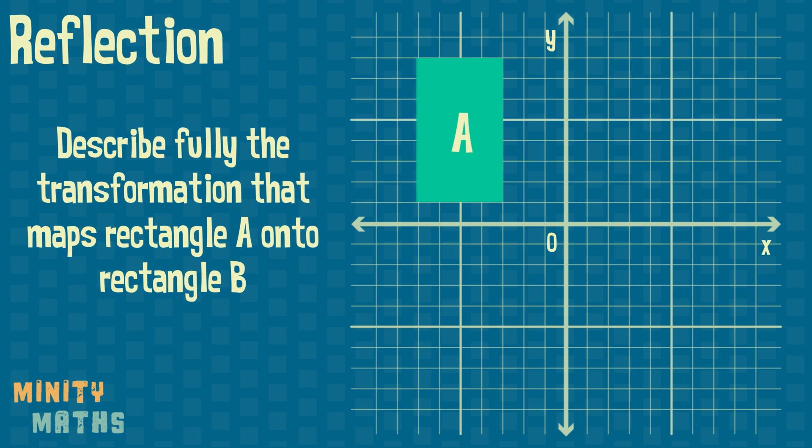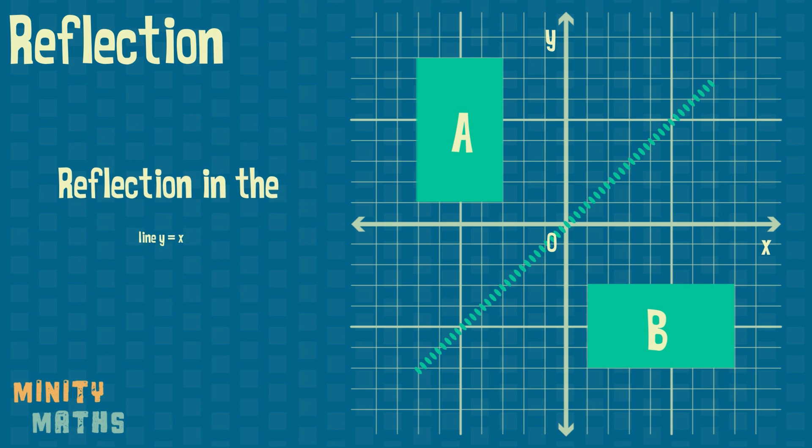Reflection can be described using only one detail: the equation of the line of reflection. It can help to think of this line as a mirror. Each vertex of the new shape and each corresponding vertex of the original shape will be an equal distance from the mirror line.